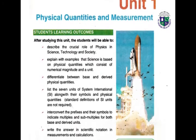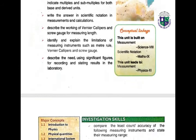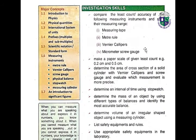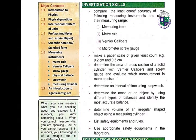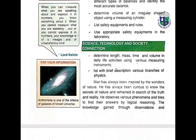Unit 1 is about physical quantities and measurement. In this chapter, we will first introduce physics — what is physics, its definition, and its applications in daily life. Then we will look at physical quantities, the international system of units, prefixes, multiples and submultiples, scientific notation, standard form, measuring instruments including meter rule, vernier calipers, screw gauge, physical balance, stopwatch, measuring cylinder, and finally an introduction to significant figures.